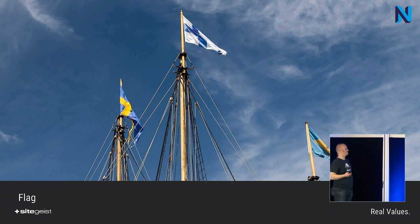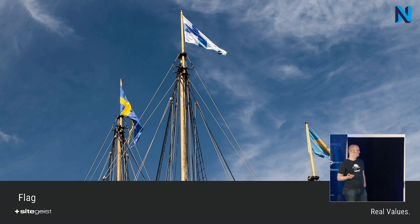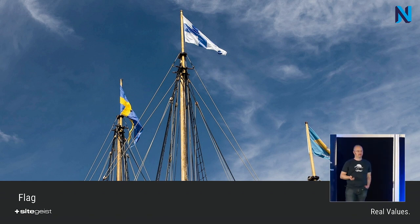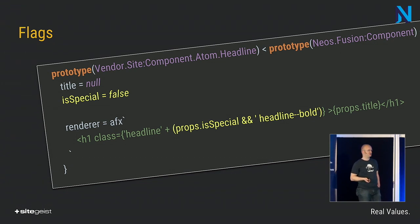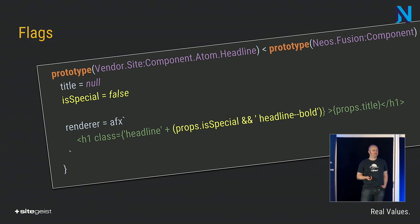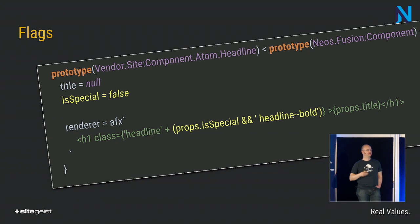A pattern you will see quite often is that a component has some variation — it's the same thing but exists in various ways. A simple way to handle this is to introduce flags. Flags are props which expect Boolean values. For example, a headline component can have a special flag, and in the renderer this special prop is used to add another BEM class. The fact that the component adds the BEM class 'headline--bold' is a secret of the component.